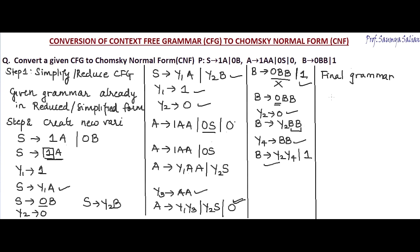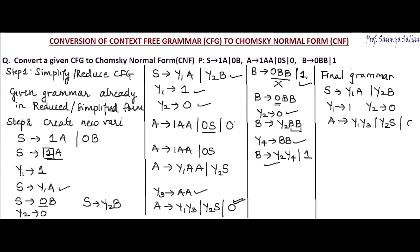So my final grammar in CNF has the following production rules: S→y1A | y2B; y1→1; y2→0; A→y1y3 | y2S | 0; y3→AA; B→y2y4 | 1; y4→BB. Looking at all the production rules, each one satisfies either of the two conditions of CNF.